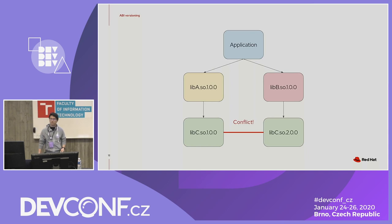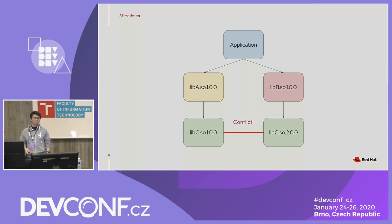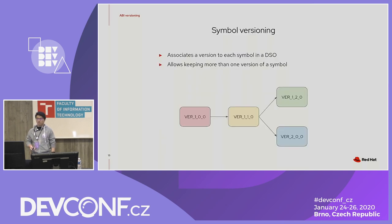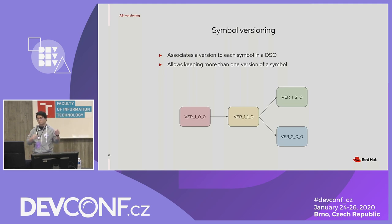Imagine the situation where you have an application depending on two libraries, each depending on different versions of the same third library. When you load this in memory, you don't really know what the behavior would be, because it depends on what the dynamic linker finds during lookup — so it's a problem. What we do instead is use symbol versioning: we add version information to the symbols in the binaries, so you can keep more than one version of one implementation or API.